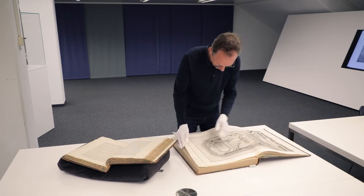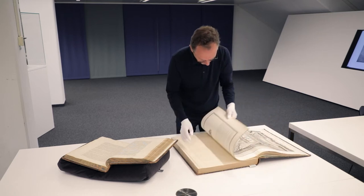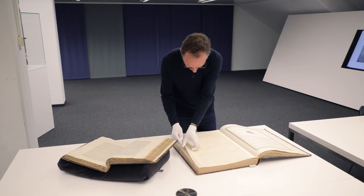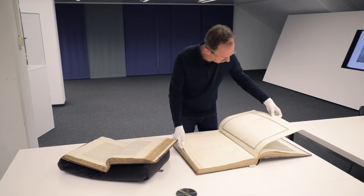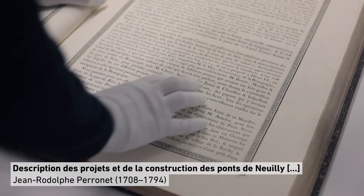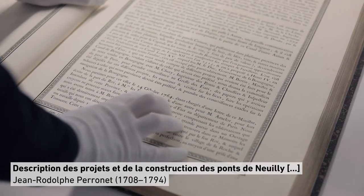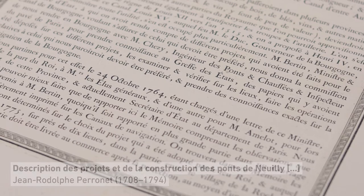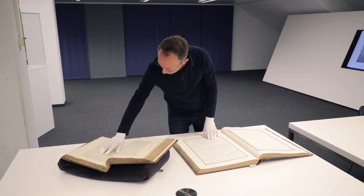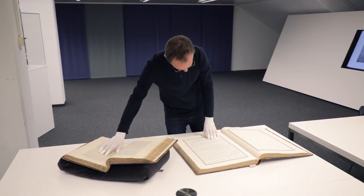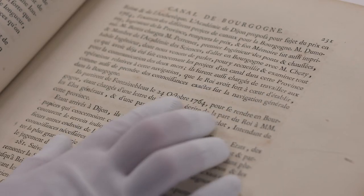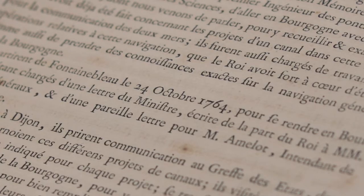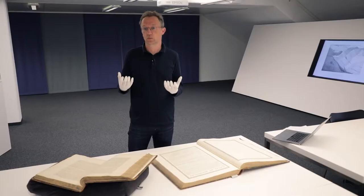For us as historians — architectural historians — it's actually quite important and useful to know which author is using which text of which other book. Partly, of course, because it allows us to understand which other books an author was reading when they were composing their own text. Secondly, it allows us to trace when completely new ideas emerge.